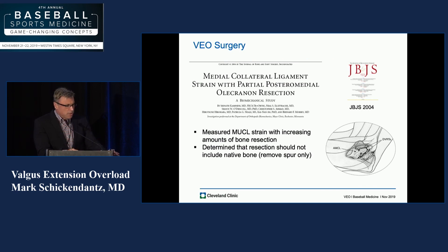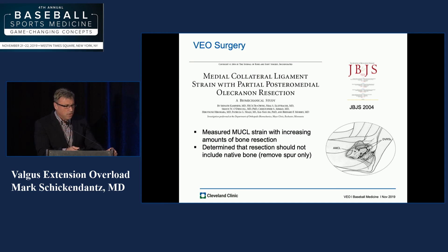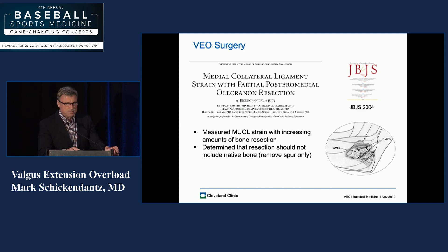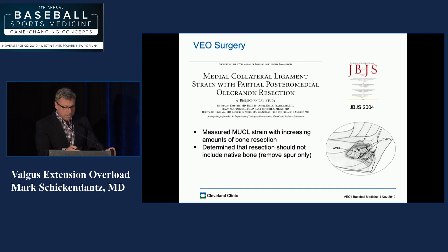I talked about just taking off the spur. This has been shown in the laboratory to be very important. Camminini did some very nice work published in the Journal of Bone and Joint Surgery in 2004 where he measured strain across the ulnar collateral ligament in the face of progressively more aggressive resection of the tip of the olecranon. He determined that resection should only include the spur — not the native bone. As you start to take more and more of the back of the elbow away, you eliminate important bony stability and increase strain on the ligament. Most veteran colleagues have seen UCL sprains as a result of too aggressive removal of spurs in the back of the elbow.